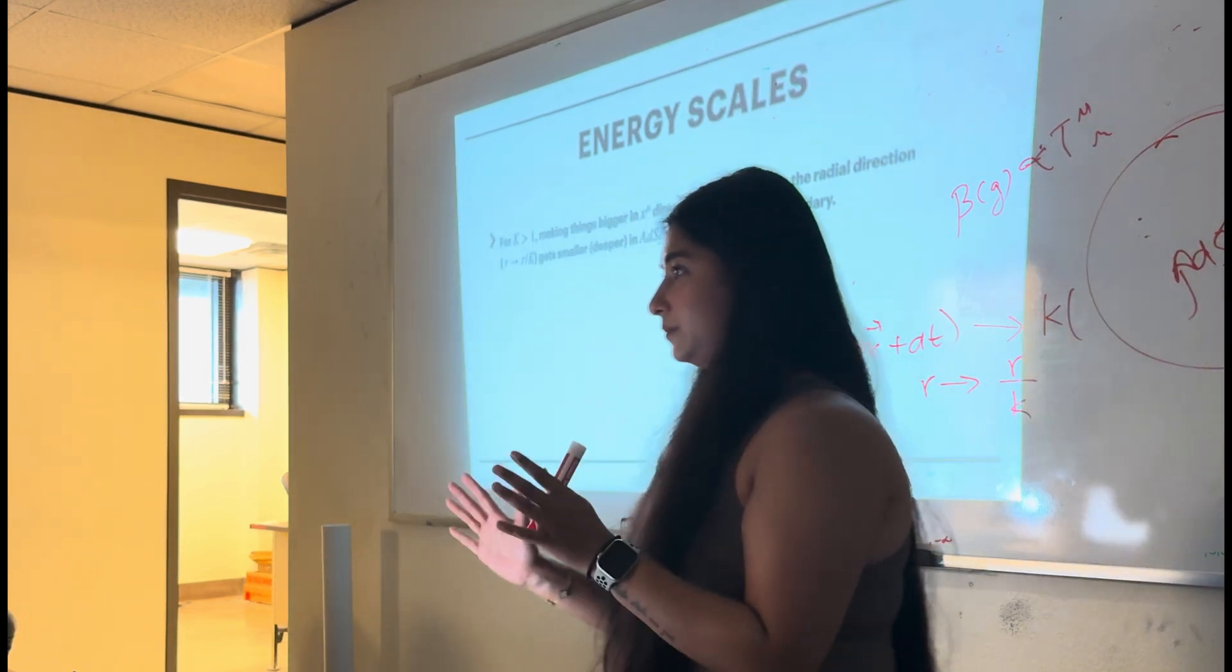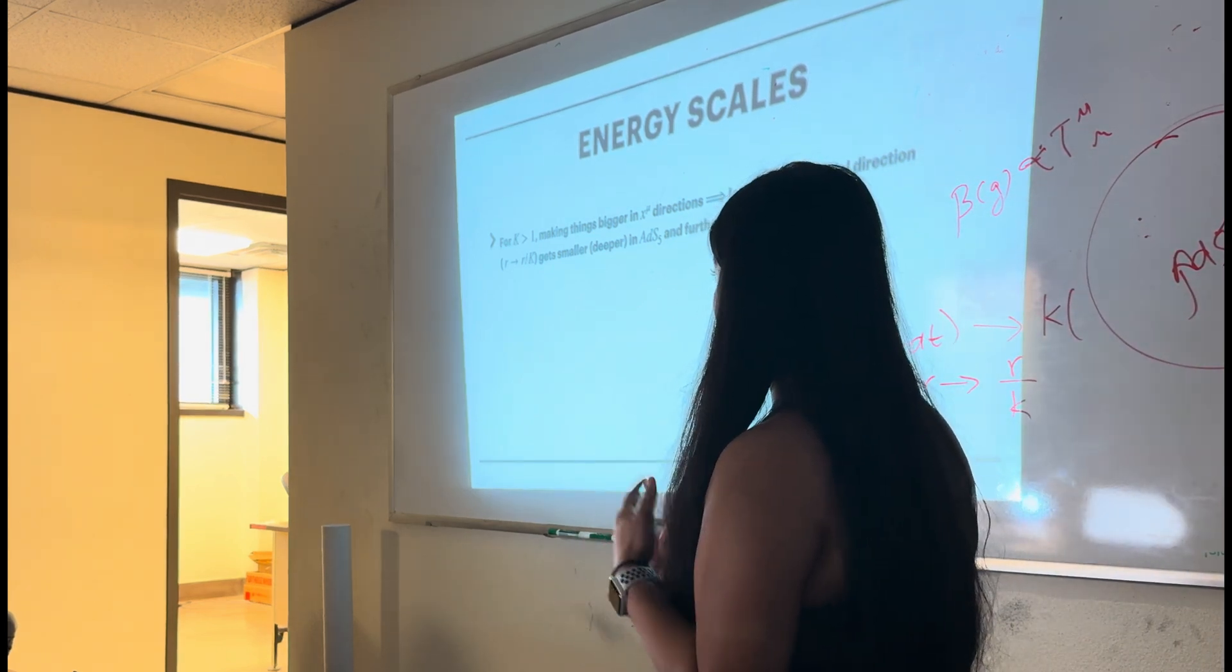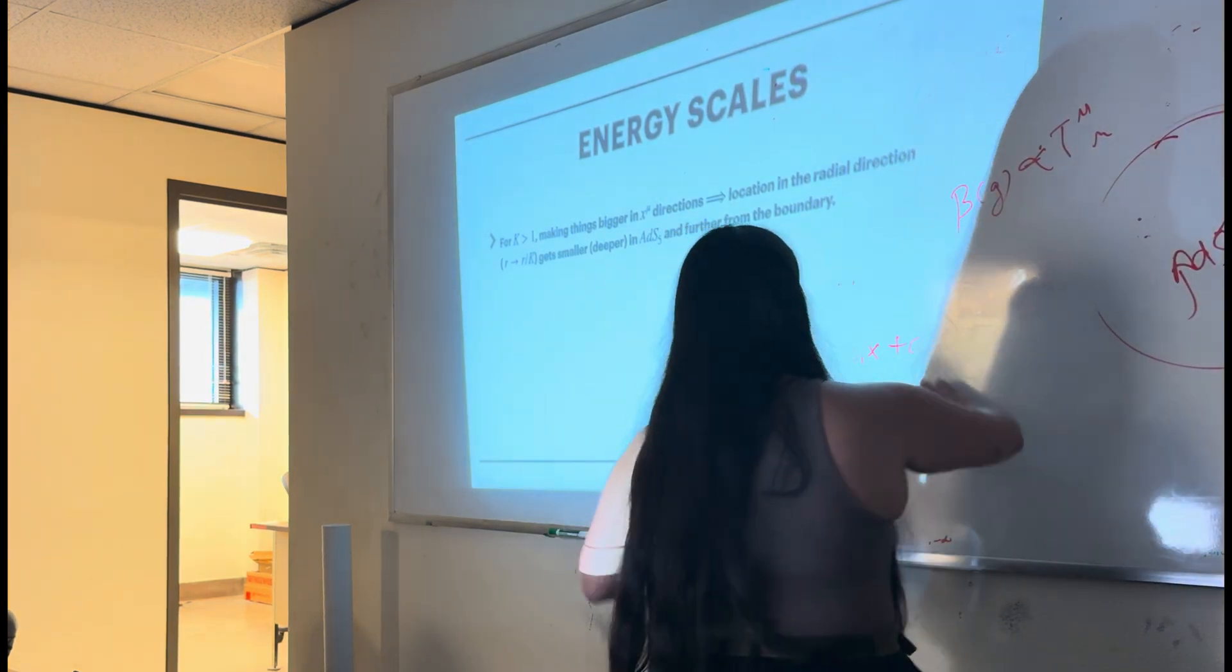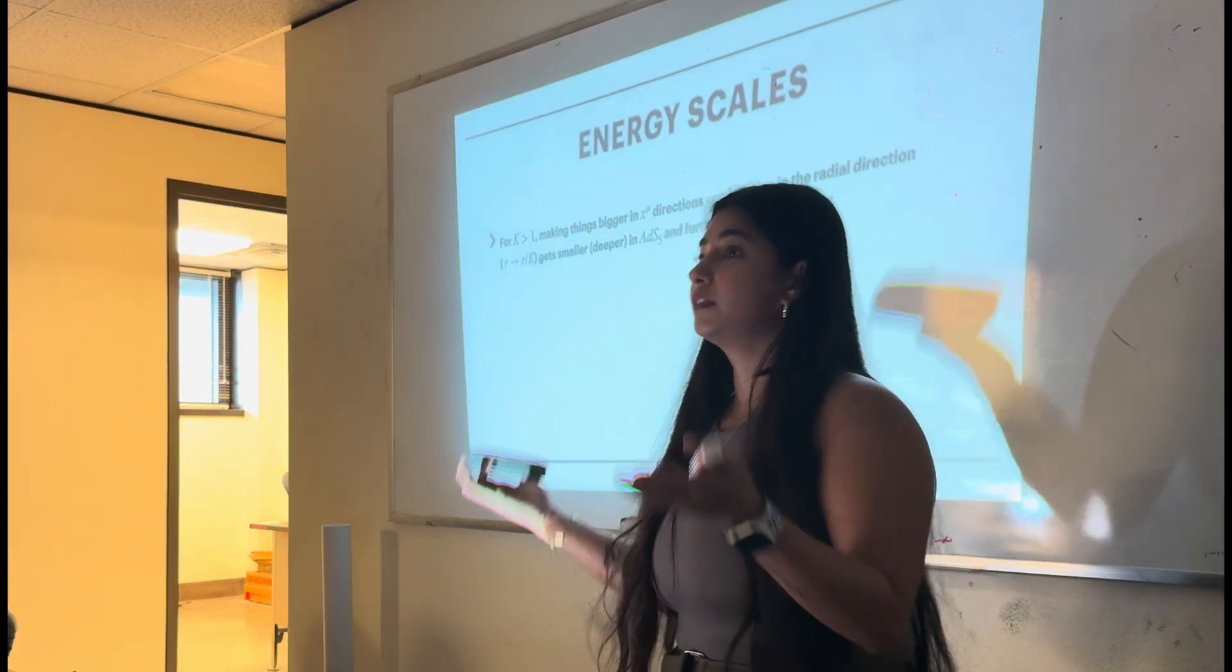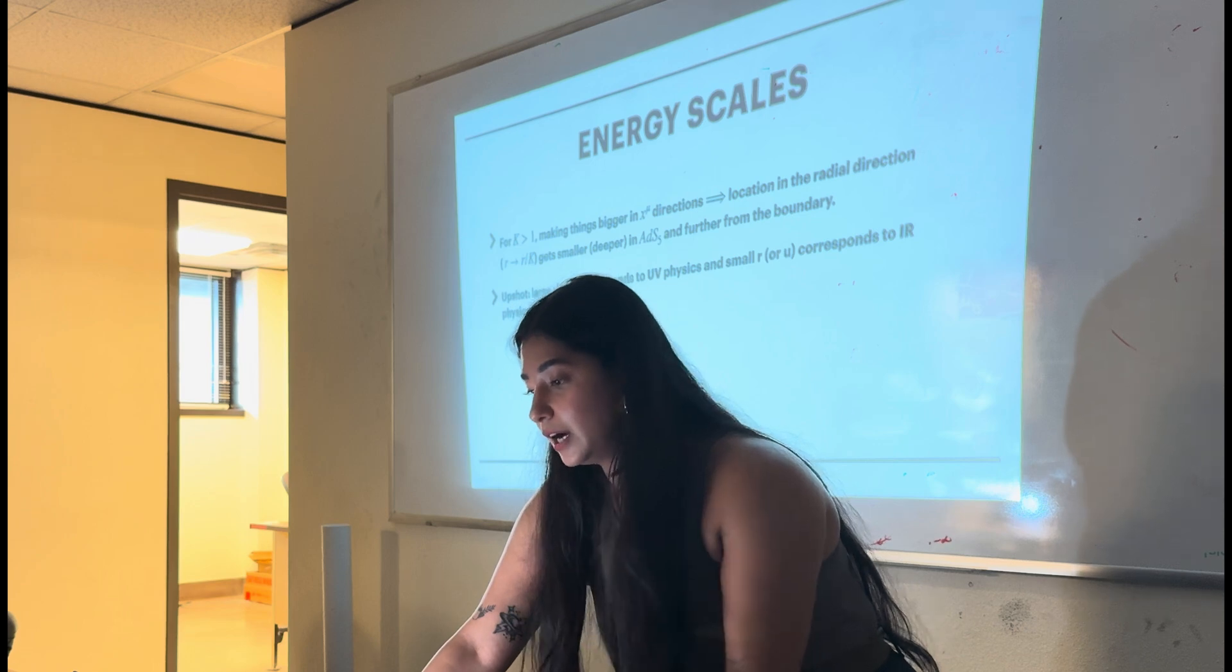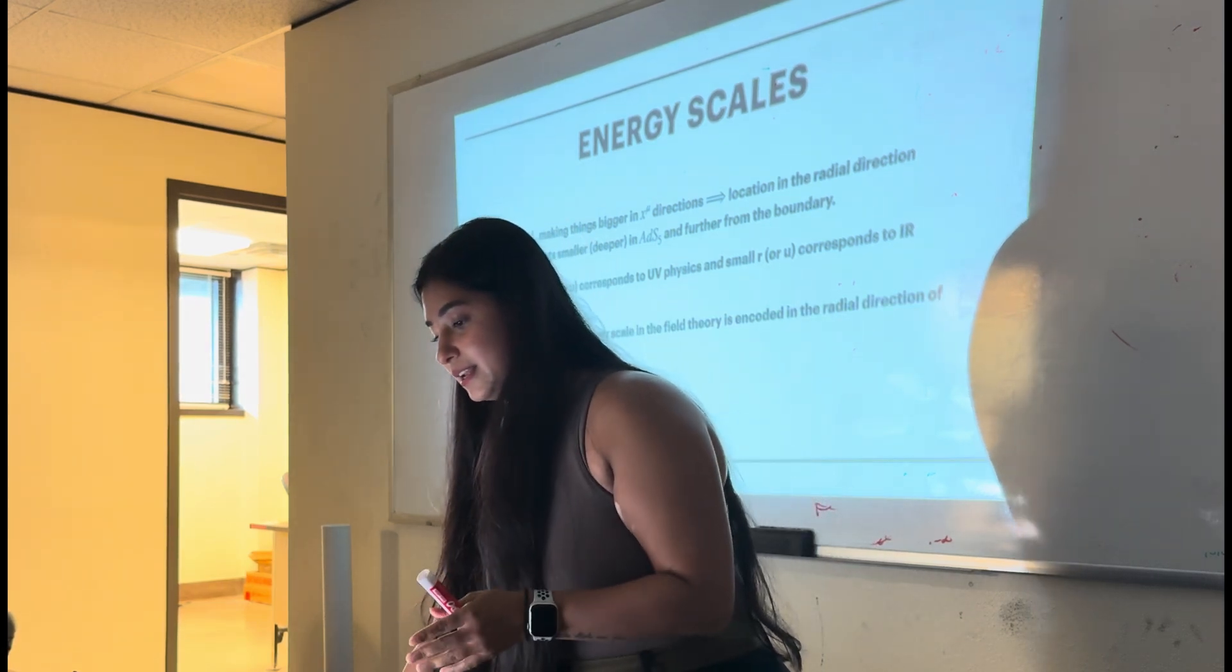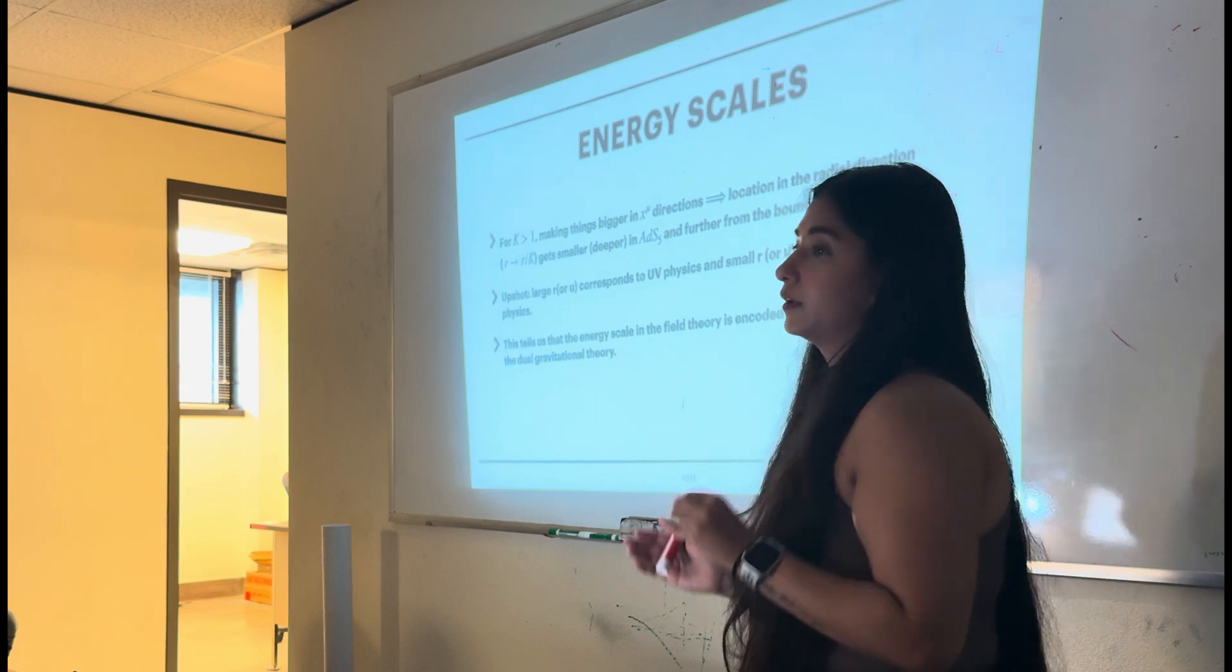Now, for any finite value of K, this K, any finite value of K, we see that when things are bigger in QFT, in X^μ direction, does not matter which direction, if they are bigger in X^μ direction, the radial part gets smaller with the same scale. This means that the bigger things are in QFT, the deeper we go in the AdS. The upshot of this is that for large R, or U, remember U was the energy scale, it corresponds to UV physics, and small r corresponds to IR physics. This tells us that the energy scale in our field theory is encoded in the radial direction of our dual gravitational theory.